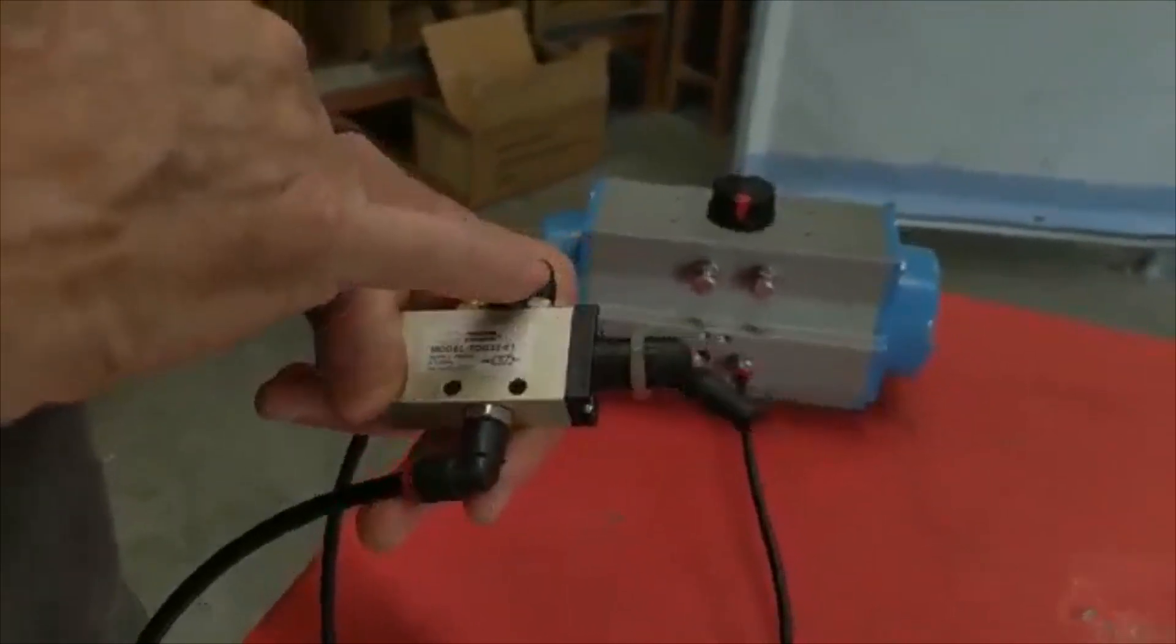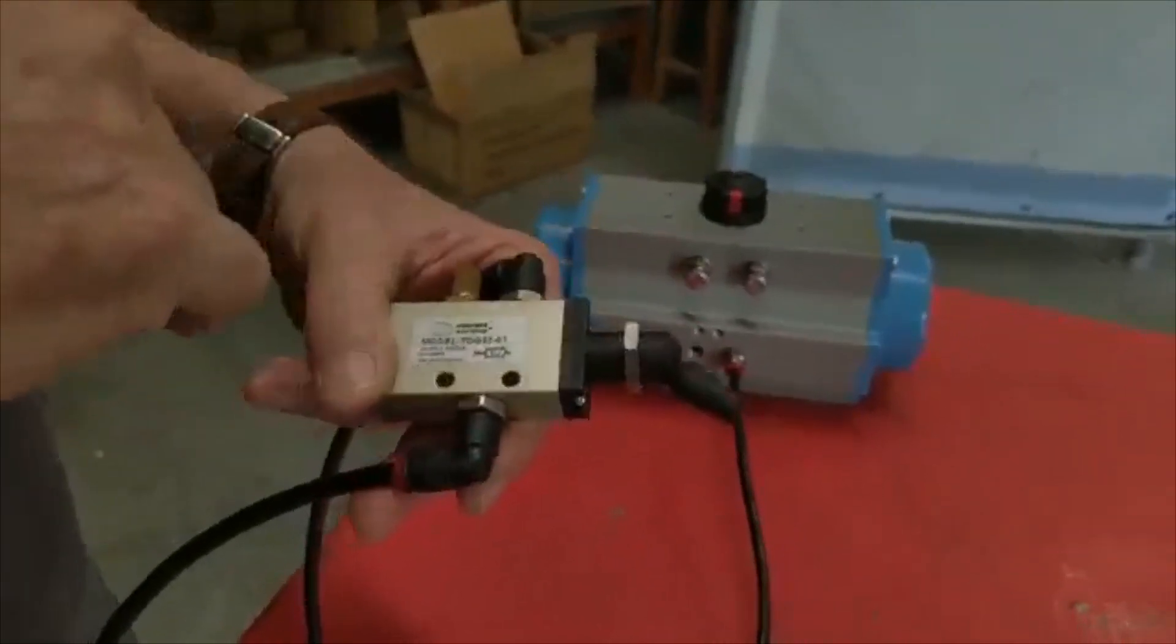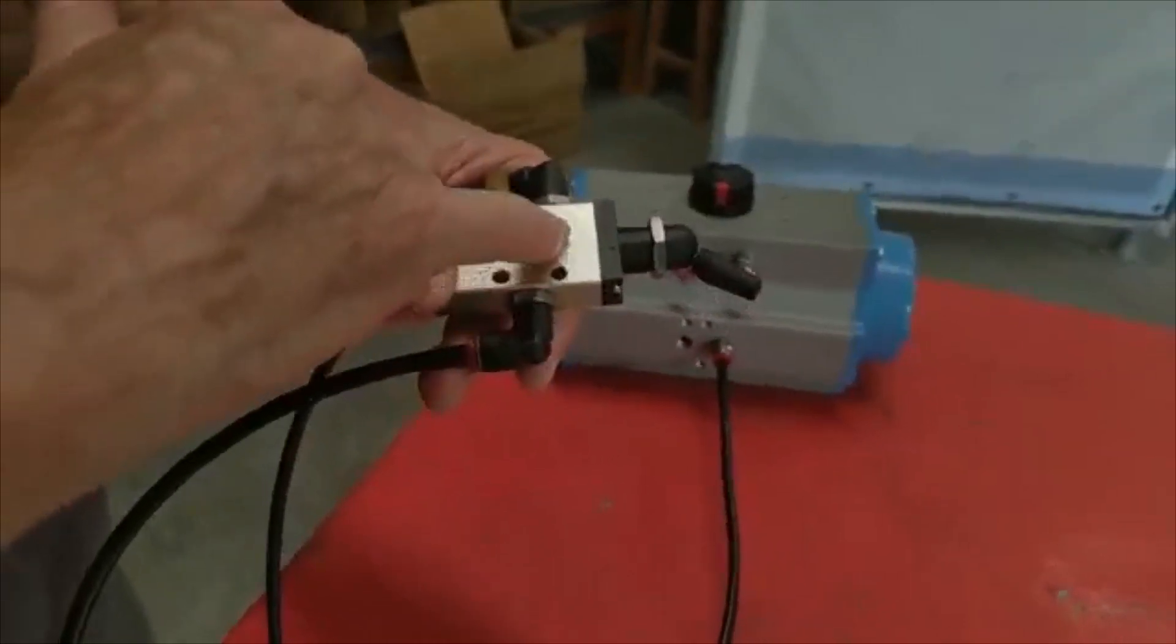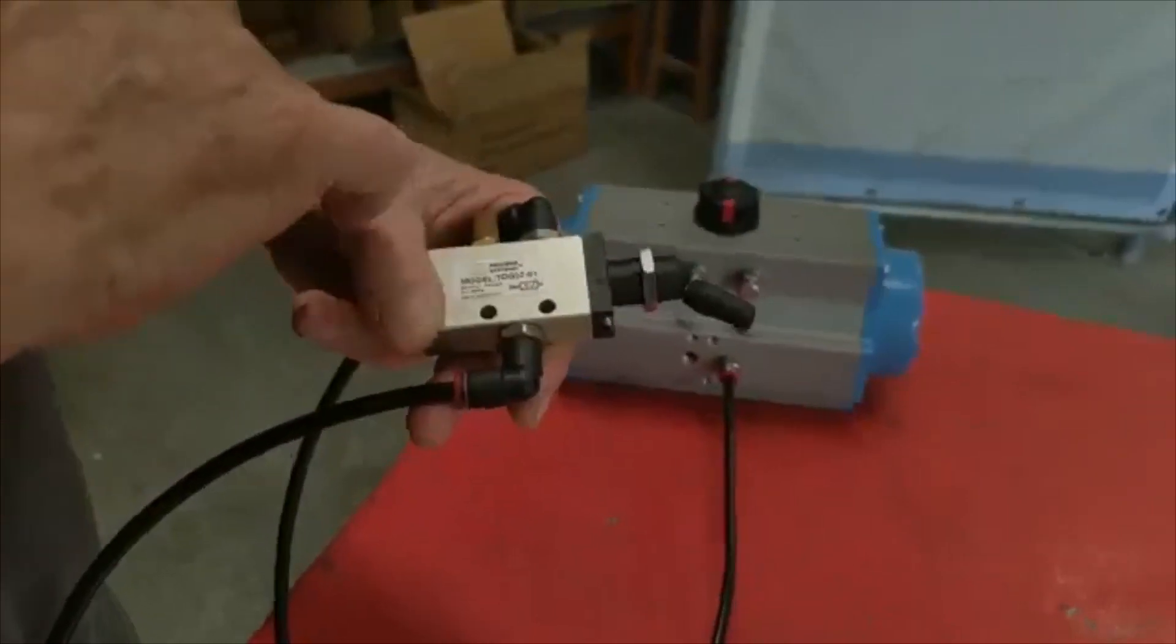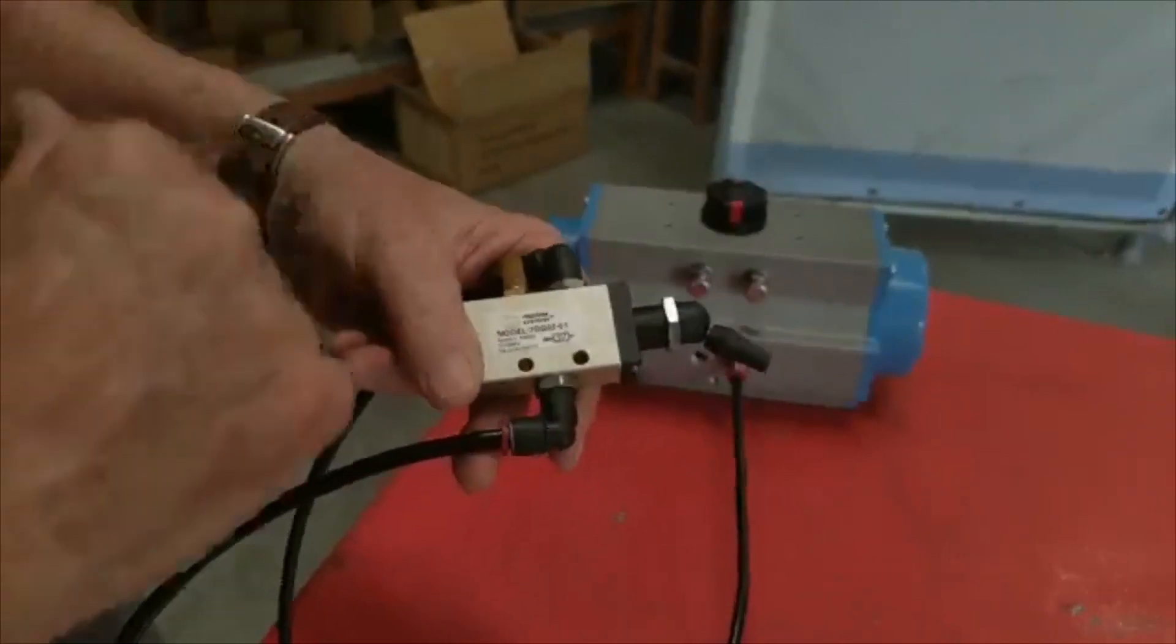The inlet port is closest to the actuator. On this diagram which shows the operation, I've put a silencer in the exhaust port here. This is feeding the pneumatic actuator in the background.